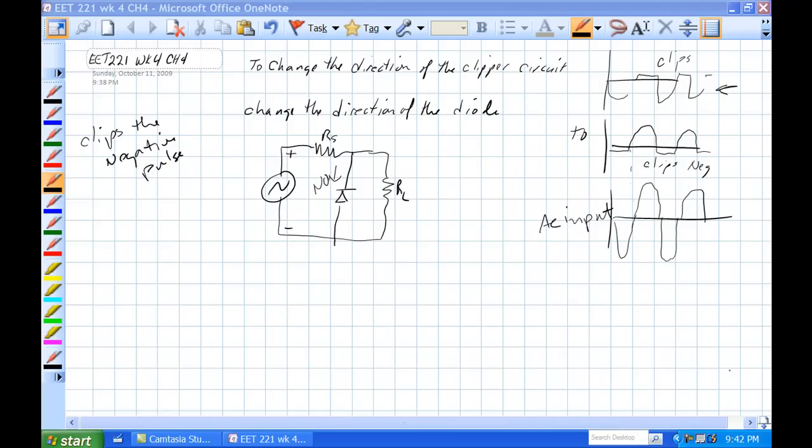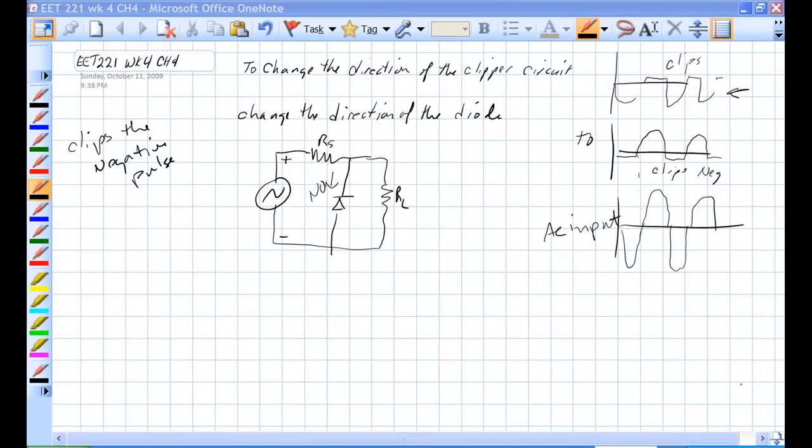We need to change the direction of the positive clipper, which clips the positive waveform, to a negative clipper, which clips the negative part of the waveform. And all we have to do is change the direction of this diode.